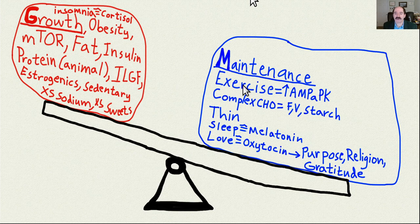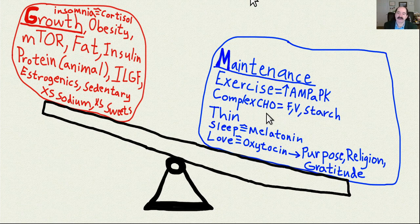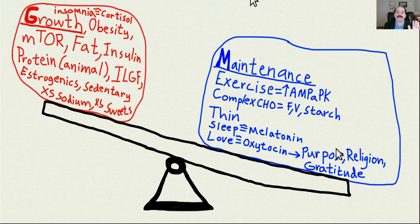Things that will slow down mTOR include: exercise, which increases the AMPK pathway; complex carbohydrates — fruits, vegetables, starches — those are all your friend; staying thin; getting your sleep; social relationships; purpose; religion; gratitude. All of that keeps you in a low-stress, low-cortisol, healthy phase, and you don't get abnormal growth.